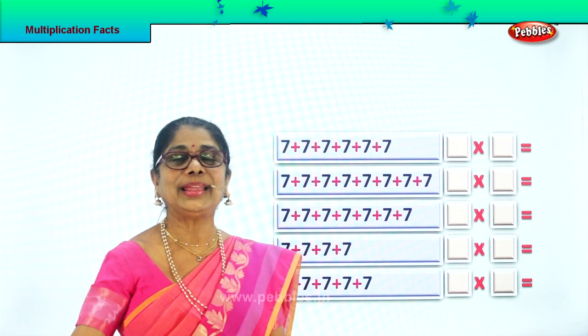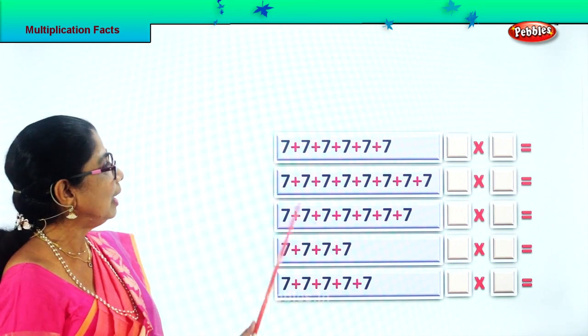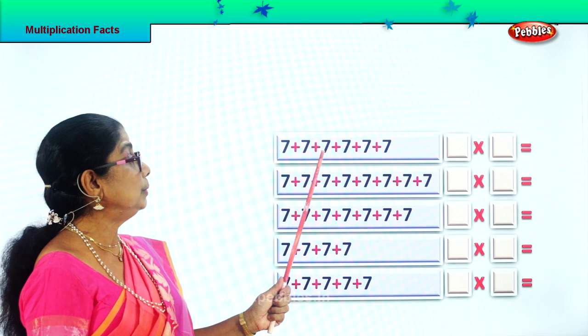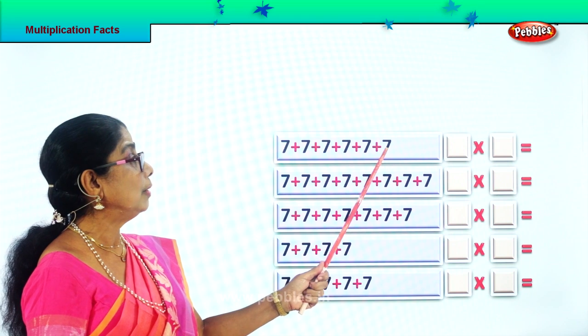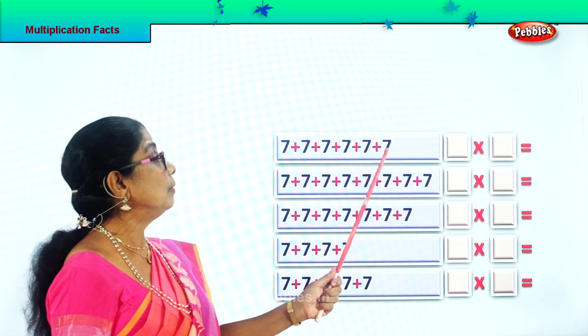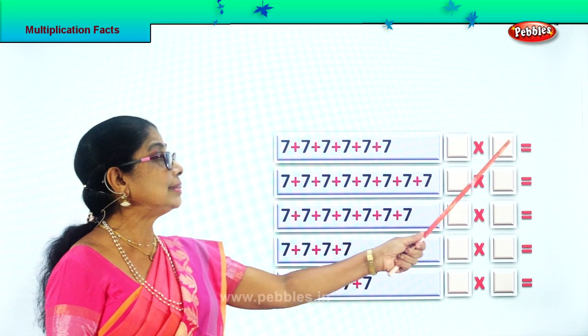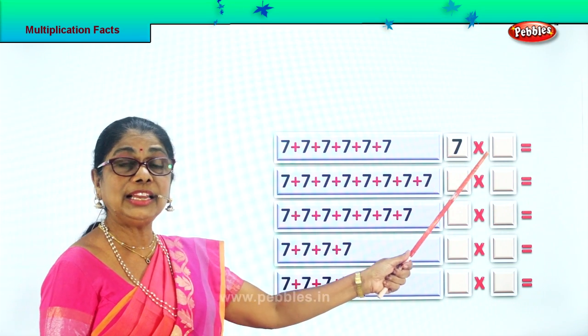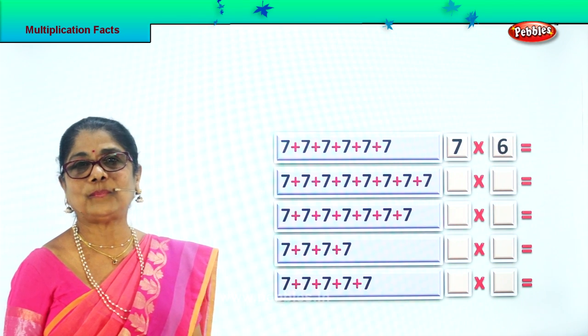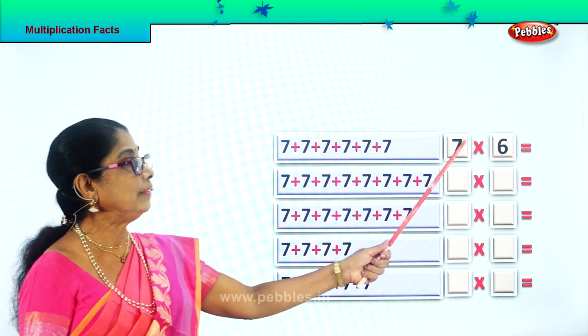Let's look at another. Are you enjoying? See what we have here — all 7s. 1, 2, 3, 4, 5, 6, 7. Put the number 7 here. How many times? 7 into 6 times. What is 7 sixes are?